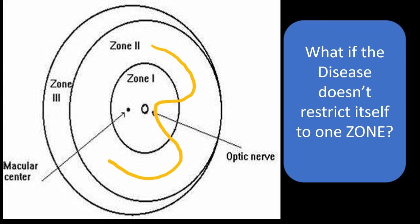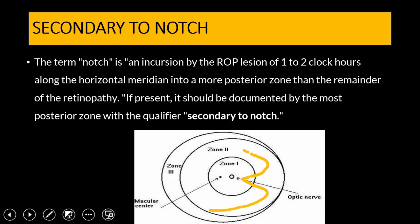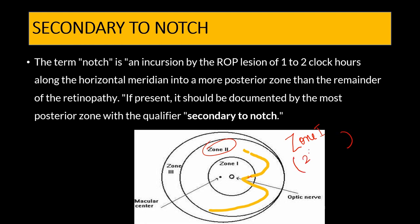Sometimes ROP is not restricted to one zone — part of the disease may be in zone 1 and part in zone 2. In such cases, you label it with the most posterior zone. For example, the yellow line here shows pathology extending from zone 2 into zone 1 as a notch, making it zone 1 ROP with the suffix 'secondary to notch.' This is a new addition to the ICROP classification.